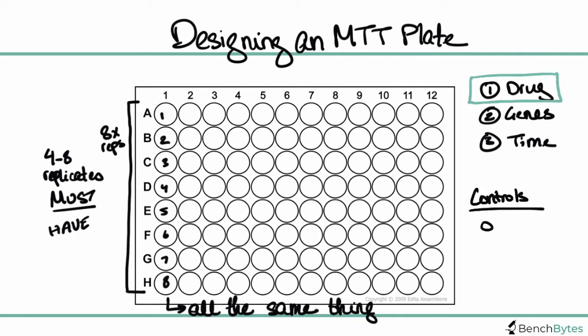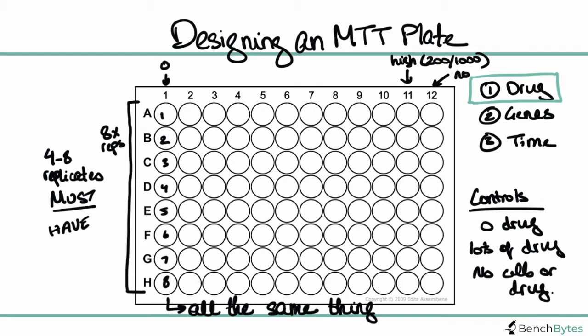It's important to think about the controls. For drugs, we need a zero drug control, something that has a lot of drug as a positive control that should kill all our cells, and something where there is no cells or drug as our negative control. So our first row can be our zero, our eleventh row can be the high drug, maybe 200 or 1,000 depending on what drug you're using, and then our last row will be nothing at all.